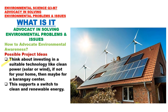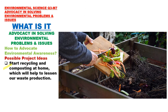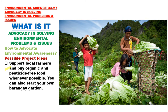Number two: Think about investing in suitable technology like clean power — solar or wind — if not for your home, then maybe for a barangay center. This supports a switch to clean and renewable energy. Three: Buy reusable products such as reusable cups, reusable bags, and glass bottles. Avoid purchasing disposable goods such as plastic bags and plastic bottles. Four: Start recycling and composting at home, which will help to lessen our waste production. And five: Support local farmers and buy organic and pesticide-free food whenever possible. You can also start your own barangay garden.